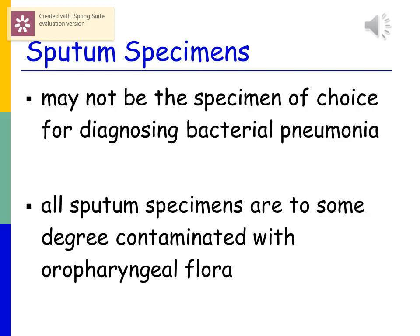For a sputum specimen, sputum is a very tricky specimen and may not be the specimen of choice for diagnosing bacterial pneumonia, though you will receive many sputum specimens, especially in the mycobacteriology section. Sputum samples coughed up from deep in the lungs pass through the mouth and are contaminated with normal oropharyngeal flora. So just because you have bacteria in a sputum specimen does not mean that bacteria is causing an infection — you really have to analyze sputum appropriately.